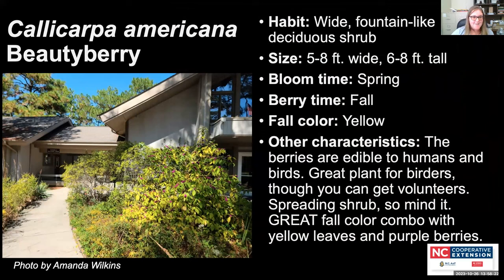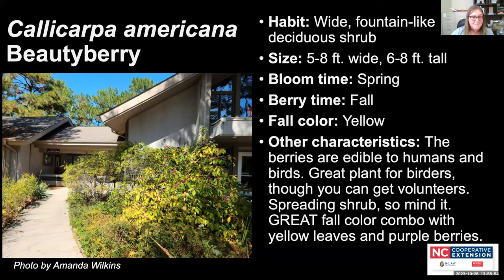One shrub to highlight is Callicarpa americana, the American beautyberry. Amanda loves the fall color — the foliage turns yellow and the berries are a bright magenta-electric purple that you just can't make up. The berries will hang on even after foliage falls off. Cedar waxwings, mockingbirds, and cardinals love this plant. You can even eat the berries — people make beautyberry jelly, which has a somewhat herby, not super sweet flavor.